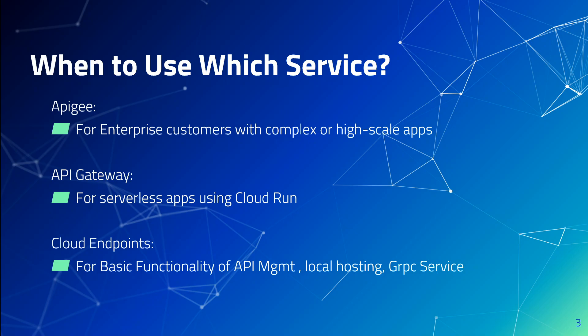Then we have Cloud Endpoints. Cloud Endpoints is managed by users instead of GCP, and they can only use one backend. Cloud Endpoints is most useful when you want to host the API Gateway on your own runtime with private networking, but would like the same kind of control plane features that you enjoy with API Gateway. The most common use case for Cloud Endpoints today is with gRPC services where a developer wants to locally host the gateway with their project. This can also be useful if you'd like to run and test Cloud Endpoints on your own local machine during development.